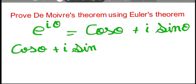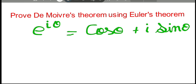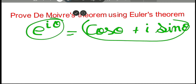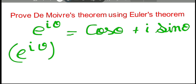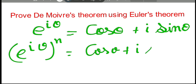Now let's try to obtain De Moivre's theorem from Euler's theorem. It's pretty simple. First of all, we have by Euler's theorem: e to the power i theta equals cos theta plus i sine theta. Let's raise both sides to the power n — n may be a rational number or even a real number — giving e to the power i theta, to the power n, equals cos theta plus i sine theta, to the power n.